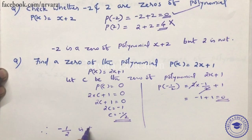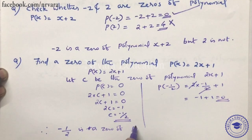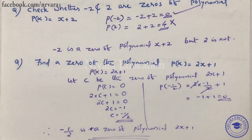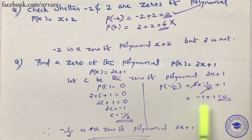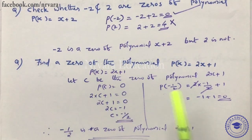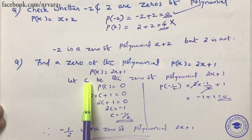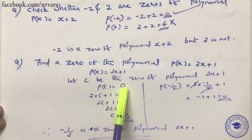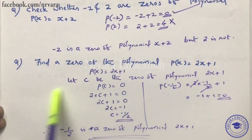We verify that P of minus 1 by 2 equals 2 times minus 1 by 2 plus 1, which equals minus 1 plus 1, equal to 0. So minus 1 by 2 is confirmed as the zero. We substituted the c value and got P of c equal to 0.